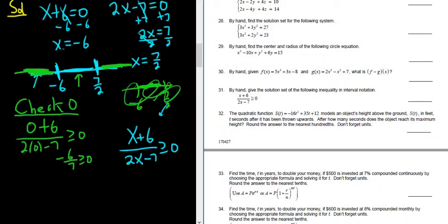So now we just have to decide whether the negative 6 and the 7 halves are brackets or parentheses. You have to think about where they came from. So 7 halves came from the bottom, and it makes the bottom 0. So you can never have 0 on the bottom. So 7 halves will be a parentheses. Negative 6 came from the top. And if you plug it in, you get negative 6 plus 6 is 0. So you get 0 greater than or equal to 0. So that's true. So negative 6 is a bracket.